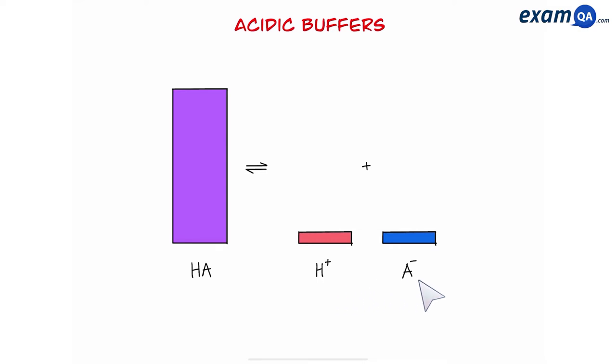Noting that the amount of H+ and A- will always be the same. An example would be ethanoic acid breaks down into hydrogen ions and ethanoate.